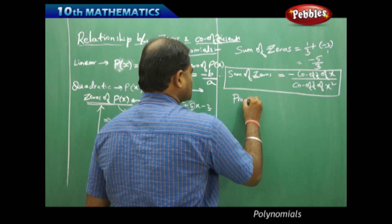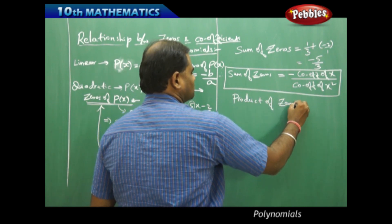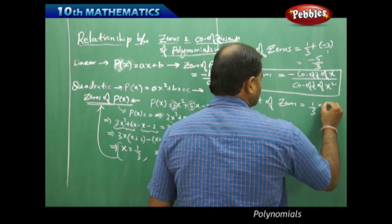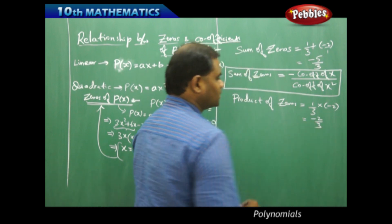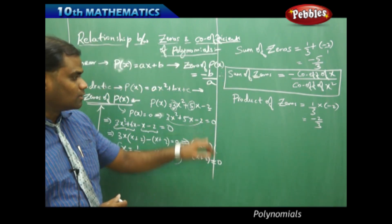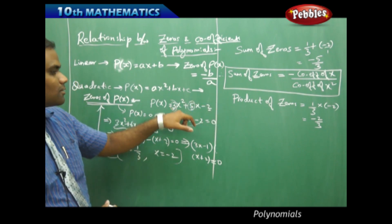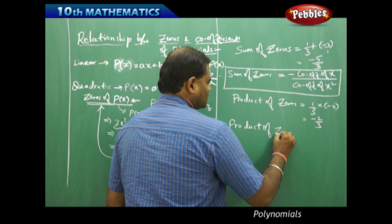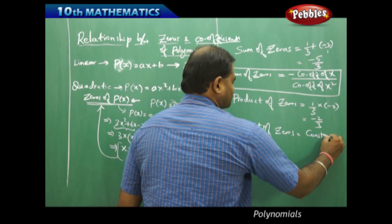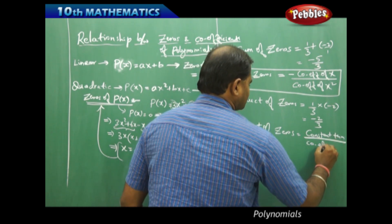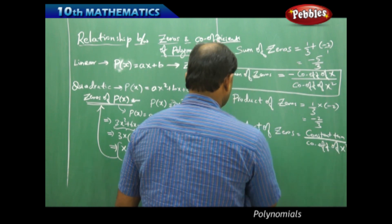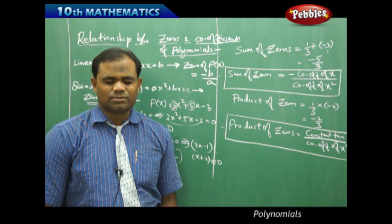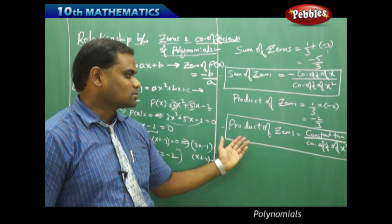Similarly, looking at the product of zeros: multiplying the first zero by the second zero gives 1/3 times negative 2, which equals negative 2 over 3. We can see that negative 2 is the constant term and 3 is the coefficient of x squared. Therefore, the product of zeros for a quadratic polynomial is the constant term divided by the coefficient of x squared.